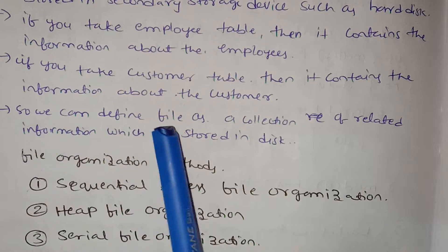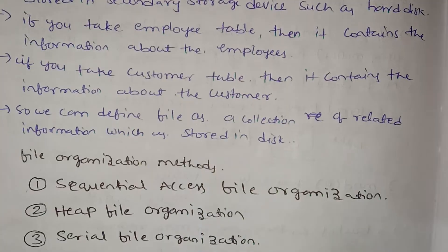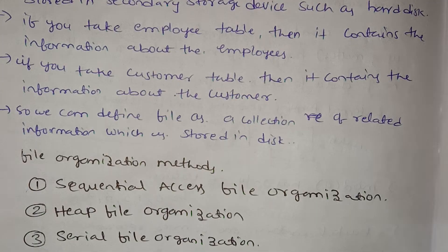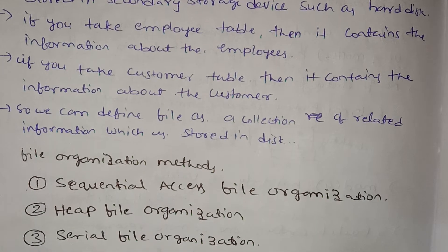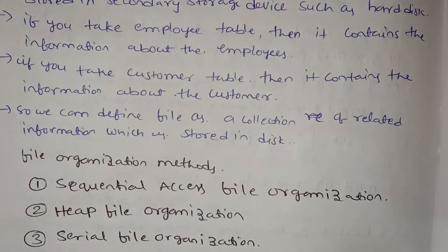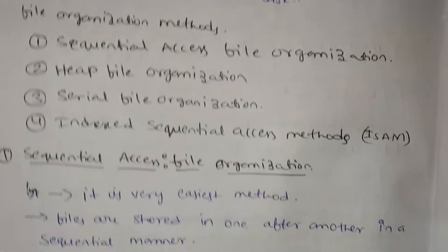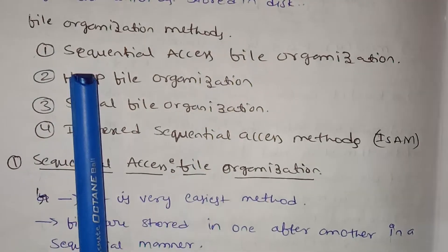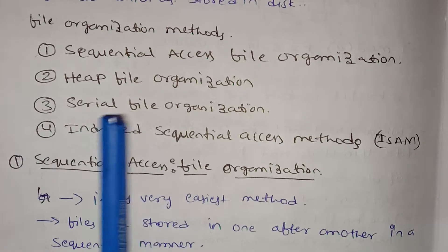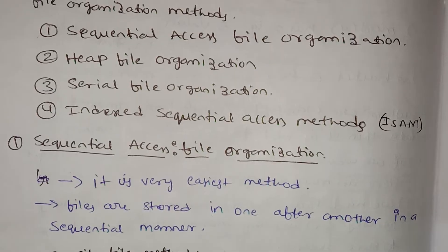So we can define a file as a collection of related data stored in a hard disk. Now we have to define file organization methods: sequential access file organization, heap file organization, and serial file organization.